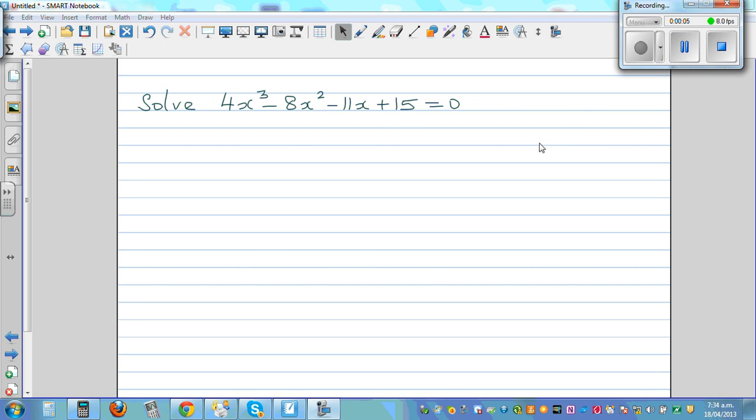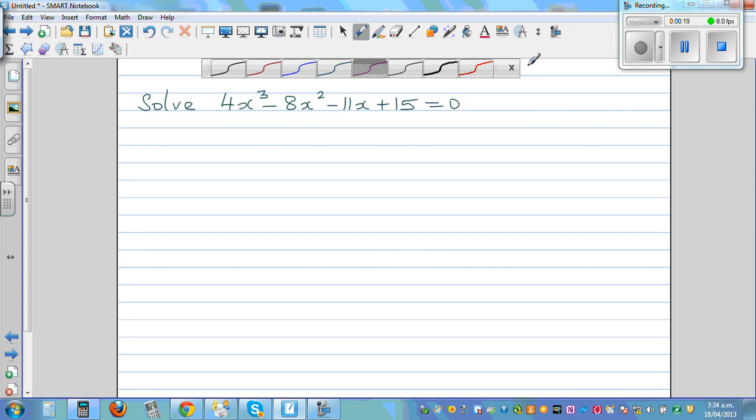Solve 4x cubed minus 8x squared minus 11x plus 15 equal to 0. If it's a cubic equation, you will have three values of x. We'll have to do a trial and error method.